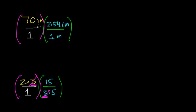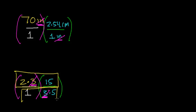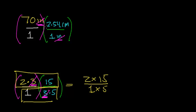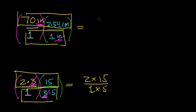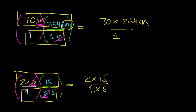Similarly for the conversion factor, there's a unit of inches in the numerator and a unit of inches in the denominator, so we can cancel those out. The next step is to multiply all the terms in the numerator and divide by all the terms left in the denominator. For the number example, that gives us 2 times 15 divided by 1 times 5. For the conversion factor, we get 70 times 2.54 centimeters divided by 1 times 1, which is just 1.